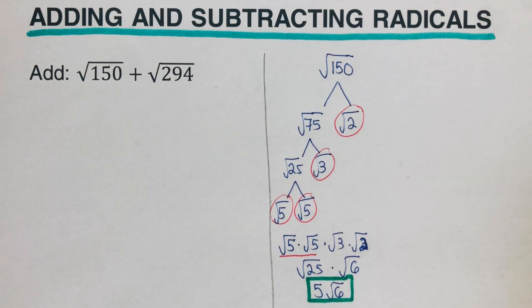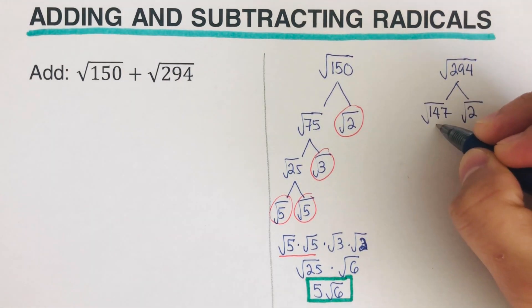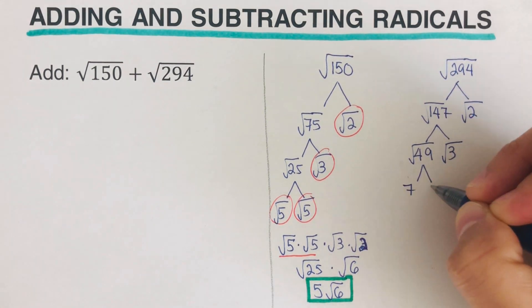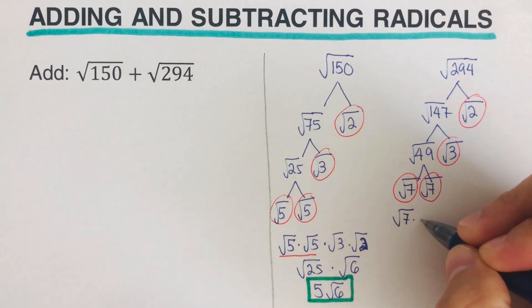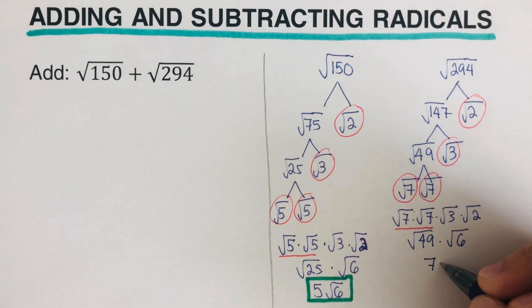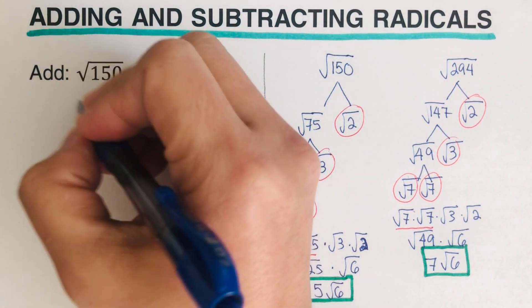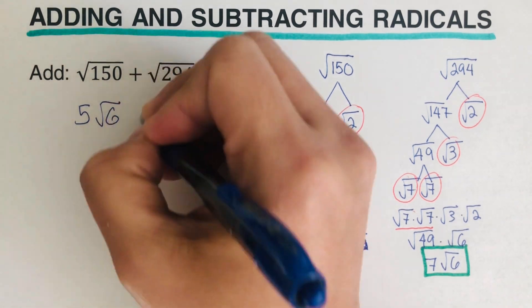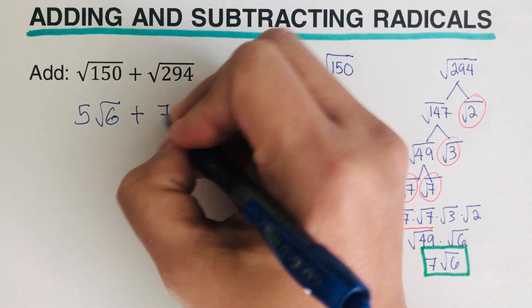Now let's do the same thing for 294. I simplified 294 and it came out to be these numbers. So the square root of 294 is 7 square root of 6. So square root of 150 can be rewritten as 5 square root of 6, and square root of 294 is 7 square root of 6.